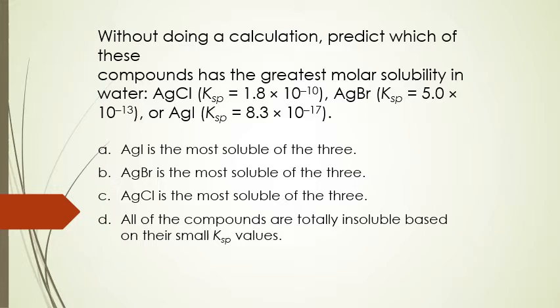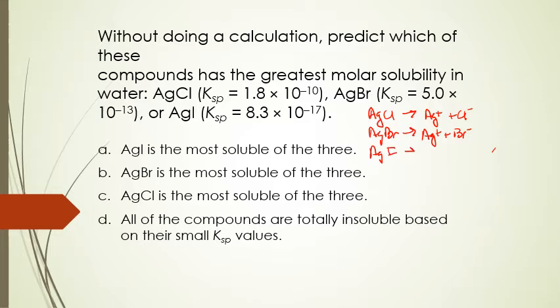Here's a multiple-choice example: without doing the calculation, predict which compound has the greatest molar solubility in water — AgCl (Ksp 1.8 × 10⁻¹⁰), AgBr (Ksp 5.0 × 10⁻¹³), or AgI (Ksp 8.3 × 10⁻¹⁷). Writing the dissolution equations, each gives Ag⁺ and one anion — two ions total for each compound, so each Ksp equals X².